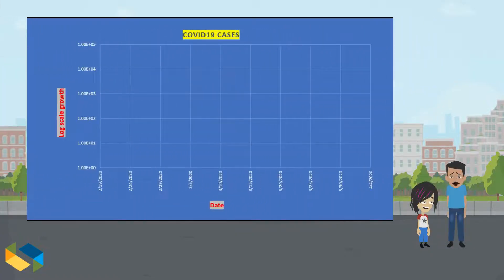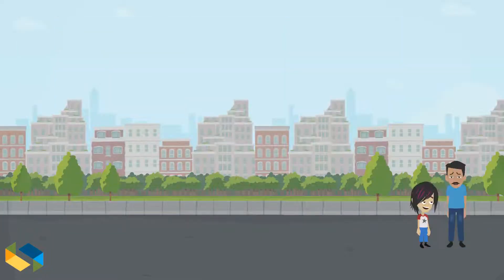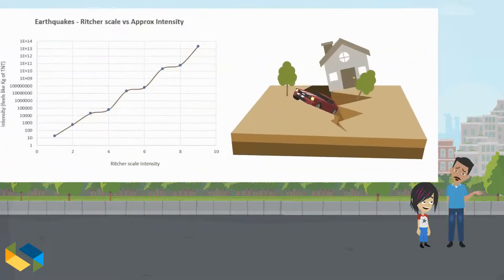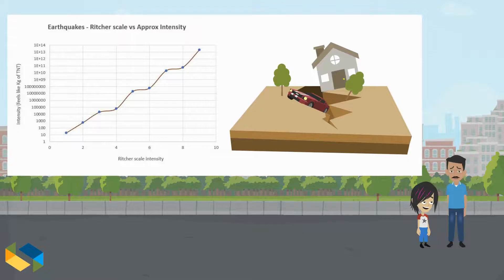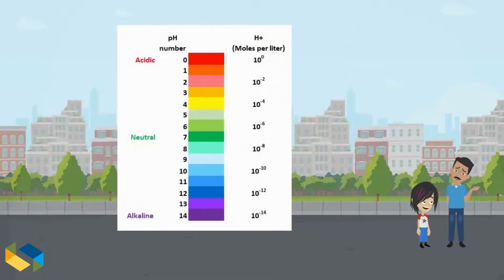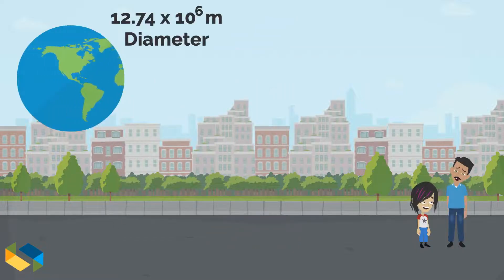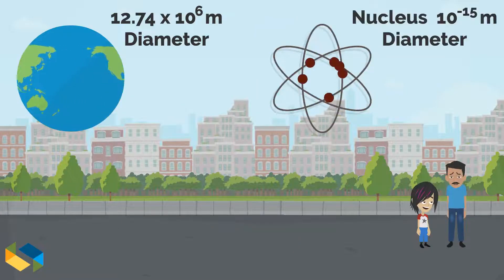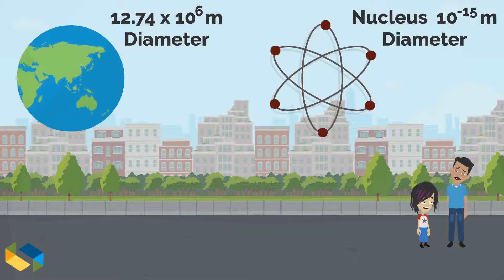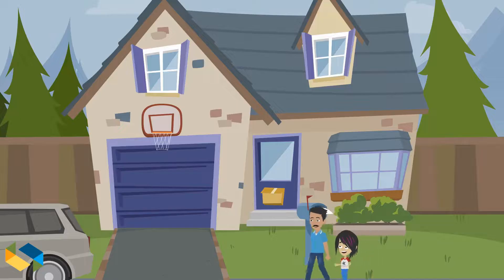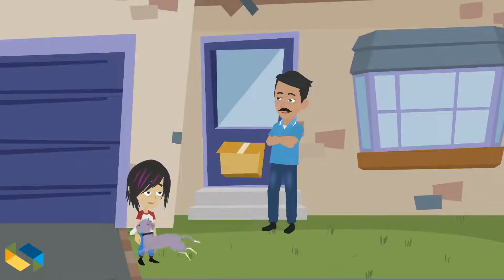Where else is this used in the real world? Almost every place you can think of! You use exponents when depicting exponential growth — say, of population over time or the spread of a pandemic — exponential decay, say the relationship of sound intensity with distance, measuring the power of an earthquake, in a pH scale to show how acidic or alkaline a substance is.